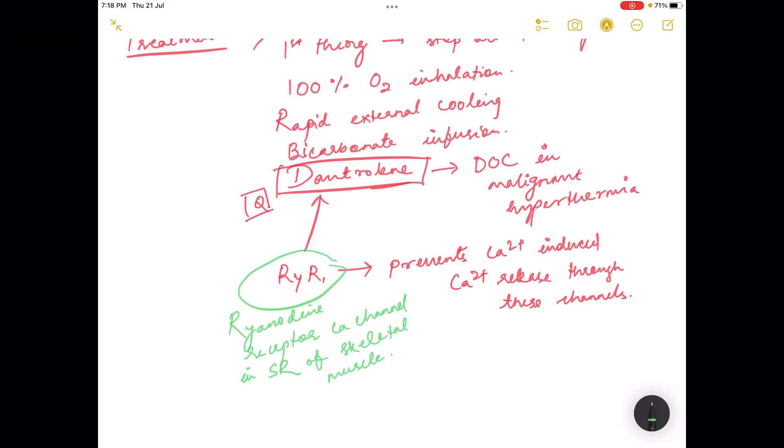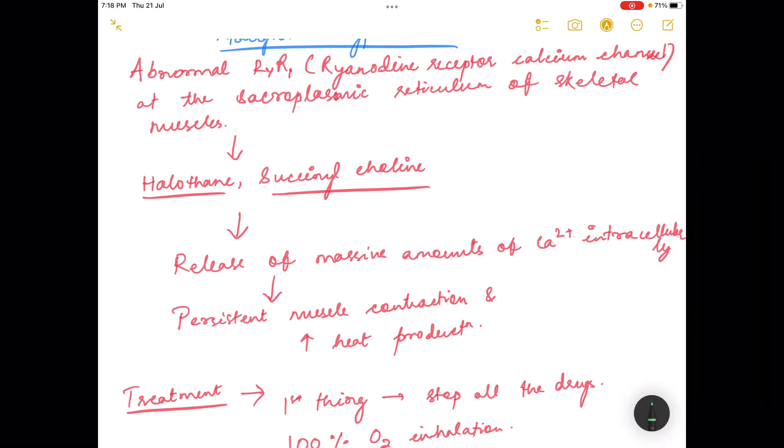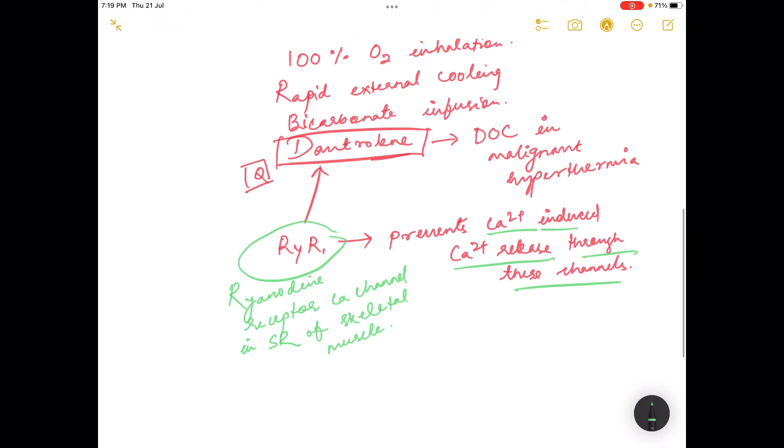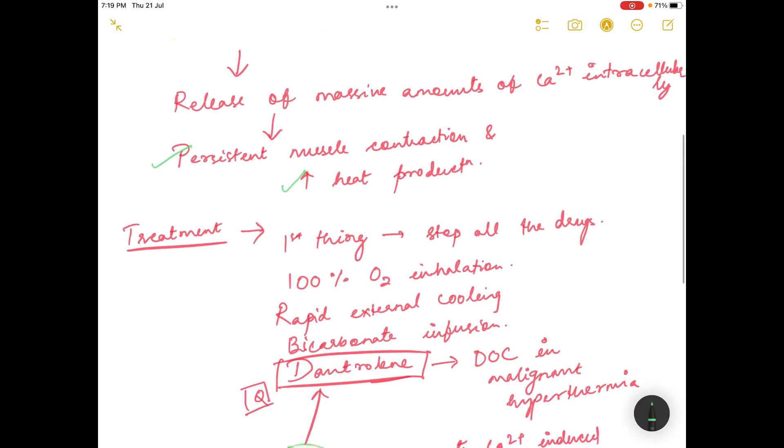Dantrolene acts on the RYR1 channel, the ryanodine receptor calcium channel of the sarcoplasmic reticulum of skeletal muscle, and prevents calcium-induced calcium release through these channels. The release of massive amounts of calcium was responsible for persistent muscle contraction and increased heat production. When calcium-induced calcium release is prevented, muscle contraction and heat production are also prevented.